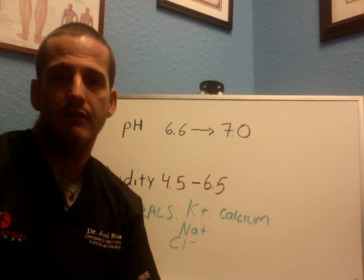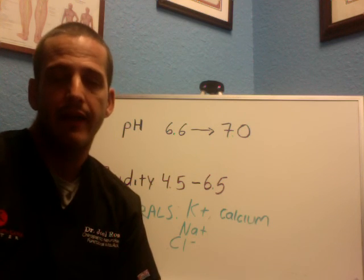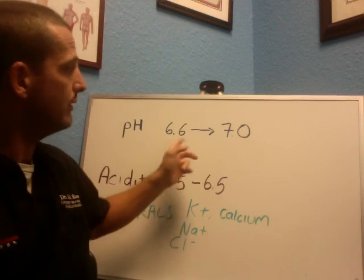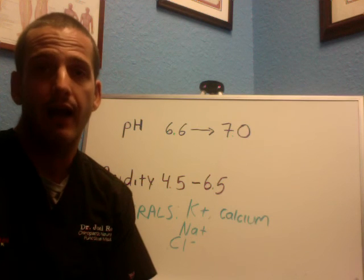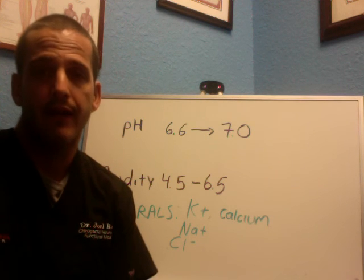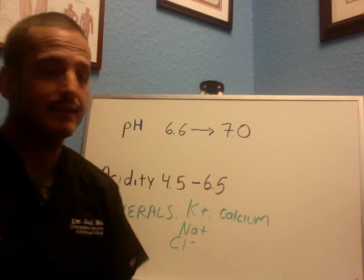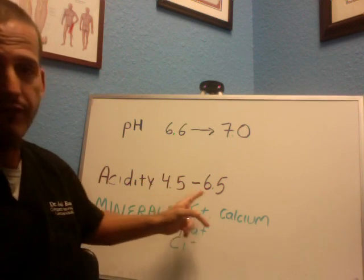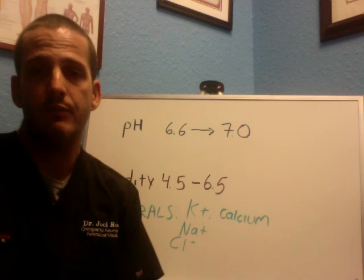One of the things we like to do is test people's morning pH, and it should be between 6.6 to 7.0 ideally. However, when we have a lot of acidity in the body, we can be at 4.5 to 6.5.